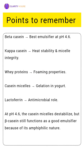Here are some key points to remember. Beta casein is the best emulsifier at pH 4.6 because it is amphiphilic in nature. Kappa casein prevents aggregation of casein micelles, provides heat stability to milk, and plays a crucial role in cheese making and rennet coagulation.